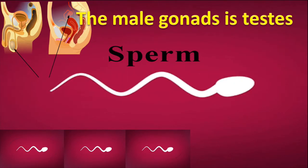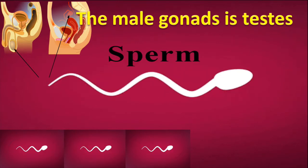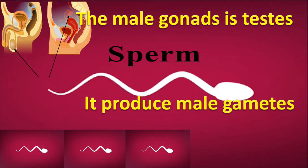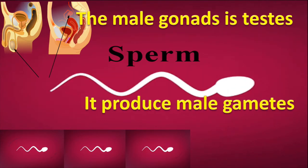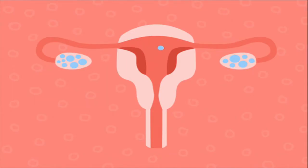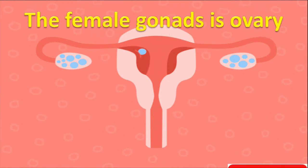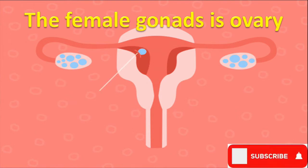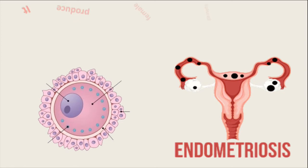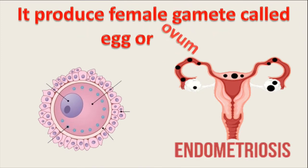The male gonad is the testis, which produces sperm — the male gamete. The female gonad is the ovary, which produces egg or ovum — the female gamete.